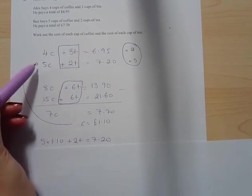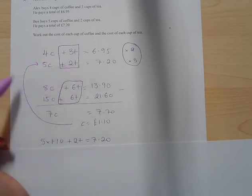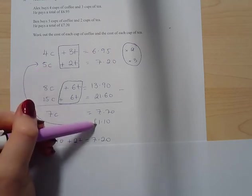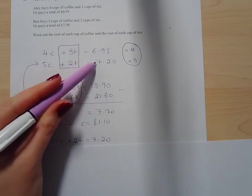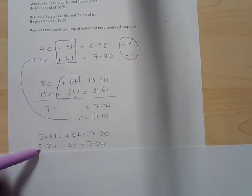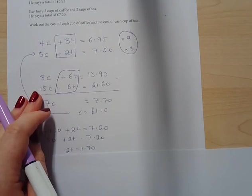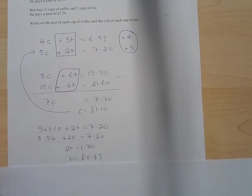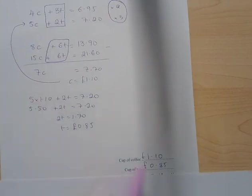Then I substitute it back into one of these equations. Now it doesn't matter which of these that you substitute it back into. I picked one with the smallest numbers to make my life a bit easier. So I'm doing five lots of coffee, which is £1.10, so five lots of £1.10 plus two tea equals £7.20. Five lots of £1.10 is £5.50, add two tea equals £7.20. Then I subtracted 550 from both sides and divided both sides by two, so one tea costs 85 pence. So then on my answer line I wrote cup of tea equals £0.85 and cup of coffee costs £1.10.